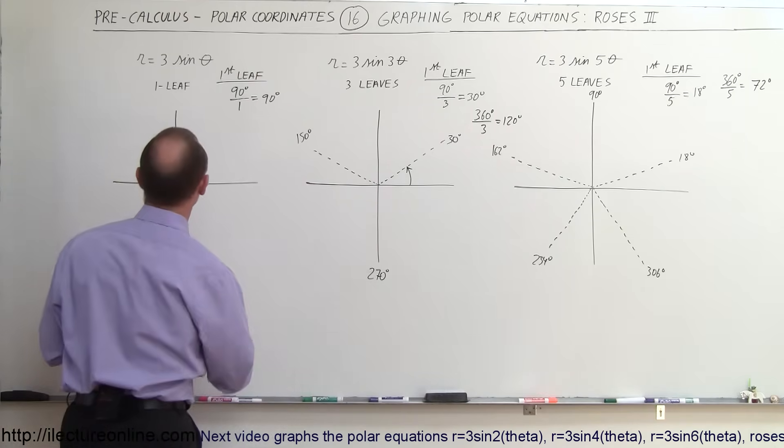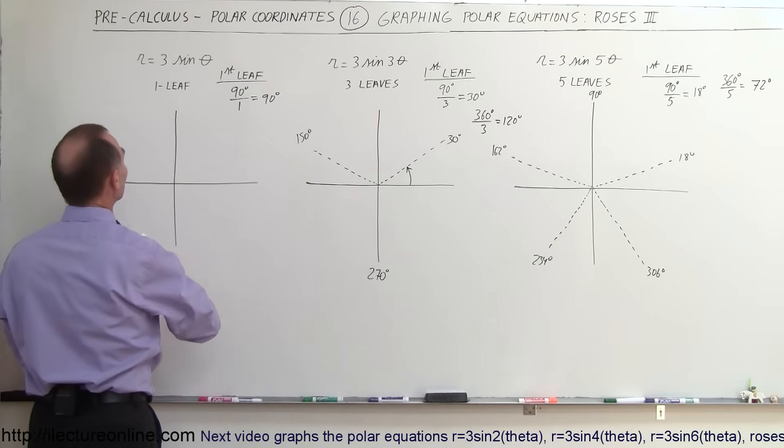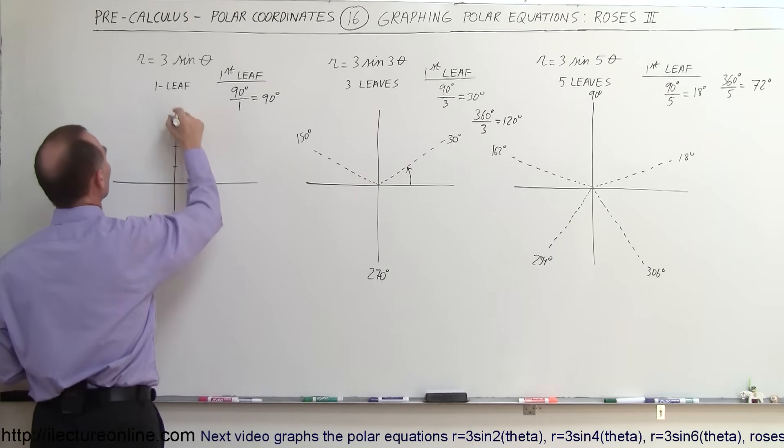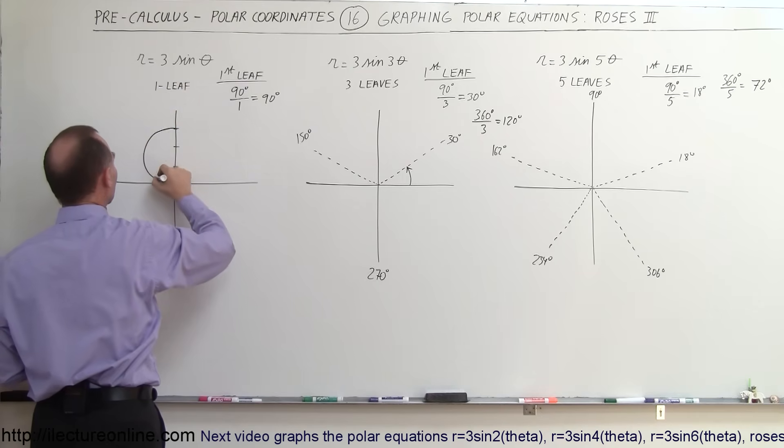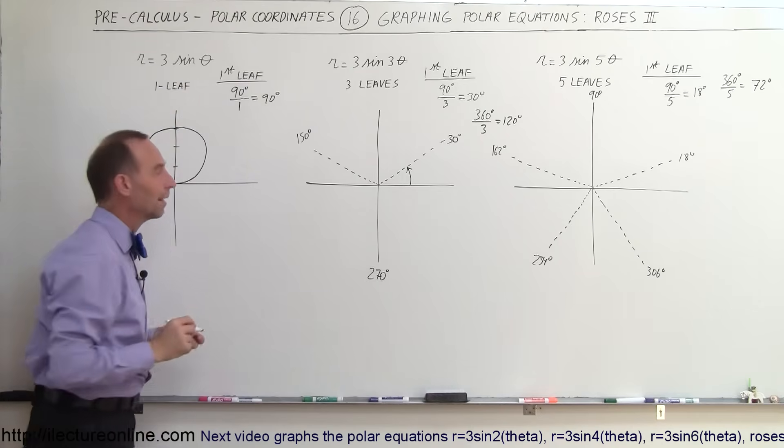Now the rest would be relatively simple. With a 1-leaf rose, starting at the top right here, 1, 2, 3 units away, because we have 3 right there. So this would simply look like a circle, just like that.